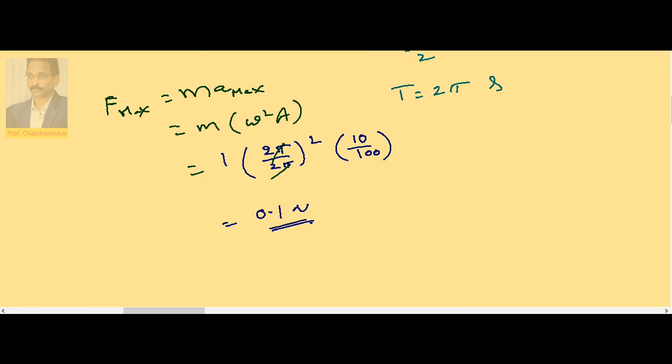Suppose if I take the force on the particle at the mean position, F becomes equal to 0 because the acceleration is 0 since velocity is maximum at that point.